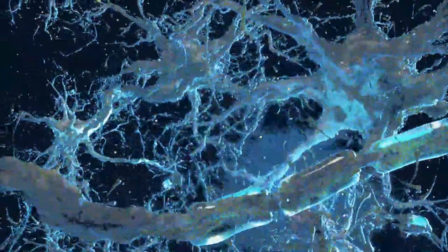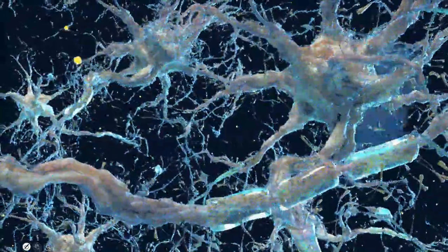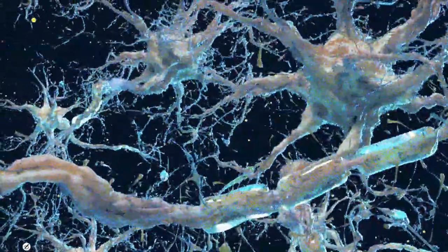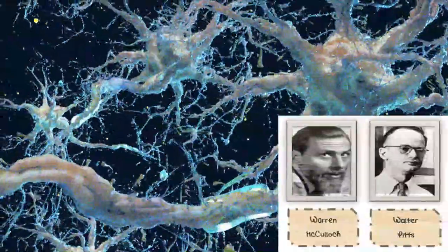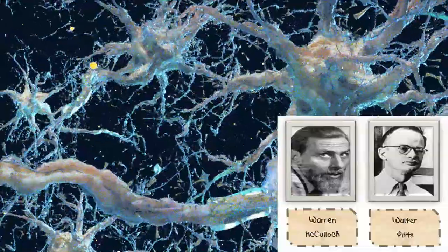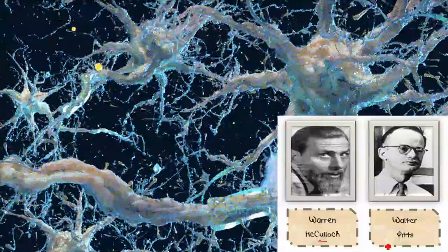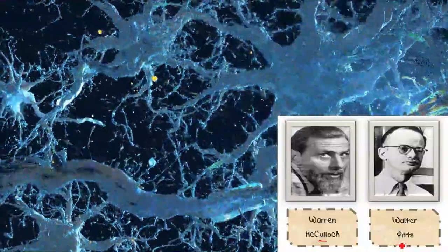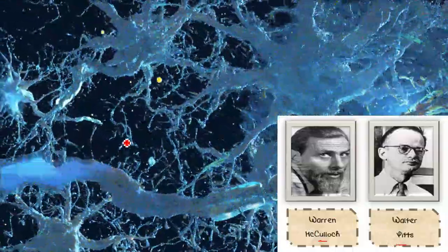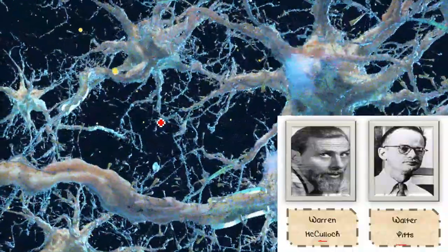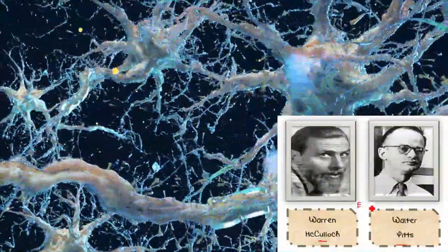Scientists and researchers wanted this to be done by machine. The idea of neural networks began as a model of how neurons in the brain function. In 1943, neurophysiologist Warren McCulloch and mathematician Walter Pitts wrote a seminal paper on how neurons might work. To describe how neurons in the brain might work, they modeled a simple neural network using electrical circuits.